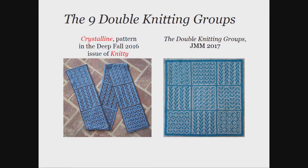I was interested in carrying this over to double knitting, because I tend to design more in knitting. Ideally you would be able to do all of the Counted Cross Stitch groups, but I've tried — the stitches are just not close enough to square to make convincing 90-degree rotations. So the bad news is you lose three groups, leaving only nine groups that work in double knitting. The good news is they're really fun to design with, and this is something you can actually make yourself. Search for 'Crystalline' and 'Knitty' — Knitty is a free magazine.